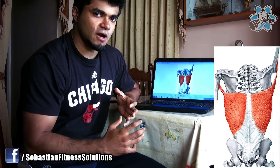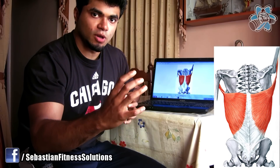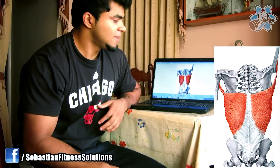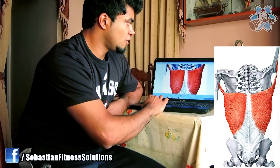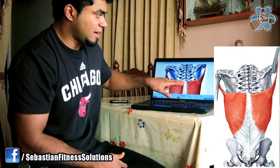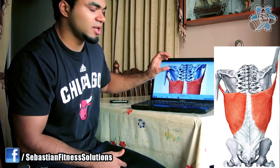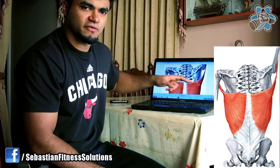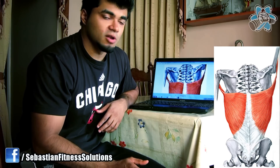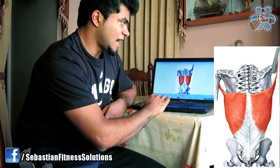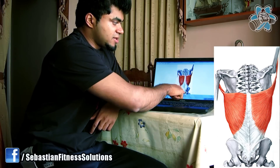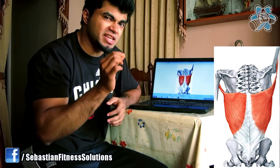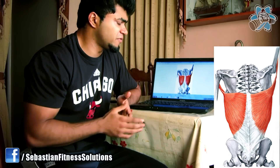Now let's evaluate the orientation of the lat fibers. Right at the top, between T7, T8 and the initial insertion points on the thoracic spine, many fibers run almost horizontal — nearly perpendicular to the vertebral column. But for the most part, the majority of lat fibers run at a downward angle from the humerus all the way down to the various origin points, around about a 70-degree angle. Most of them are downward, with a very small portion that is horizontal or almost horizontal.